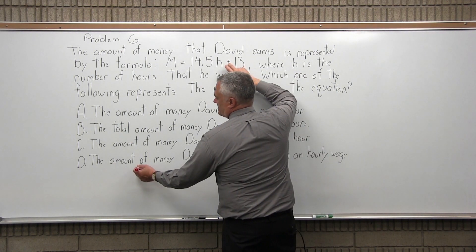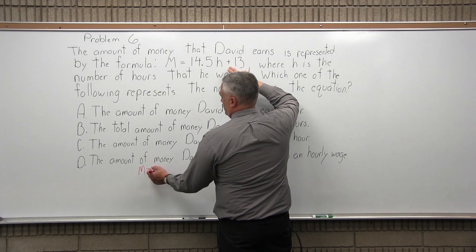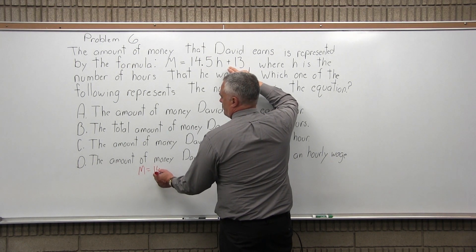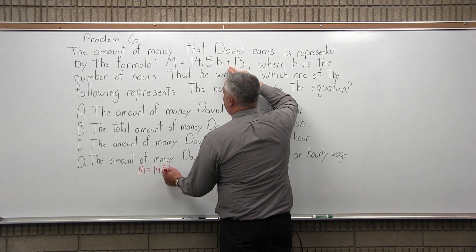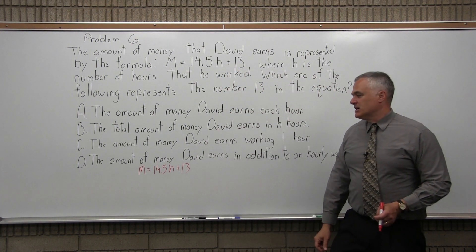So let me take the formula that's given. M is 14.5H plus 13, H is the number of hours, M is how much money he makes.